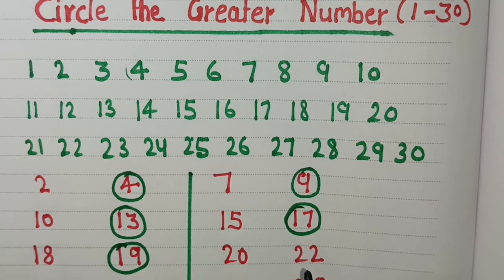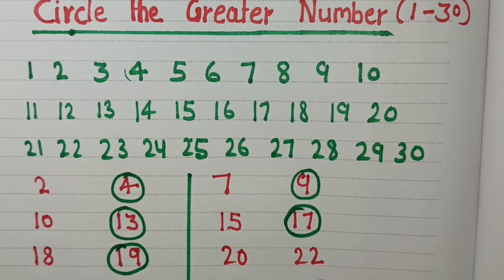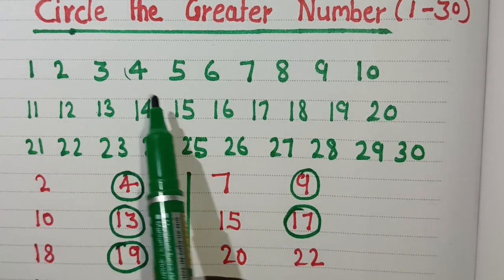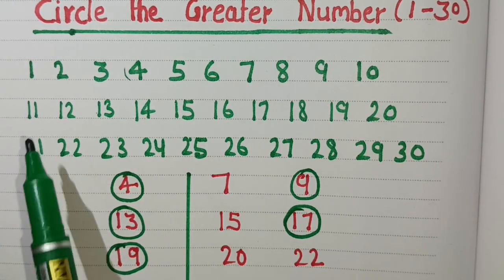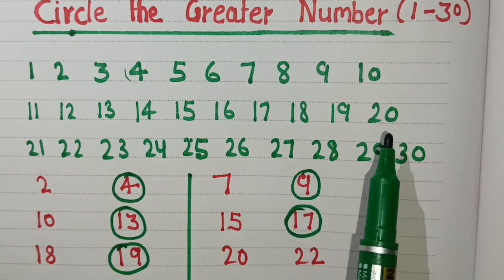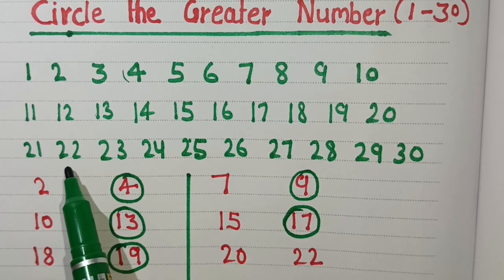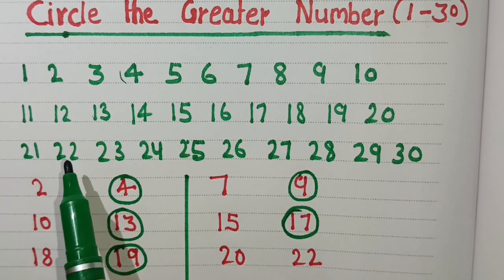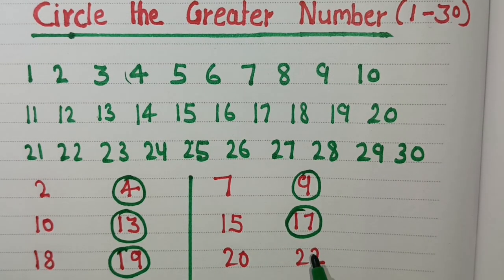Next numbers are 20 and 22. So 22 is the greater number. We will circle number 22.